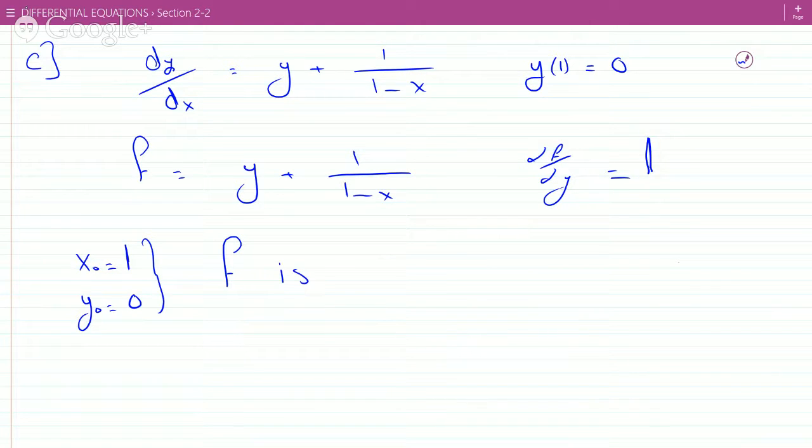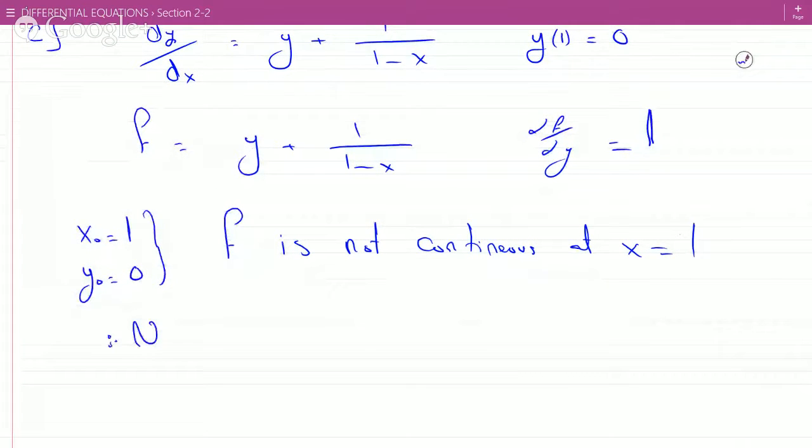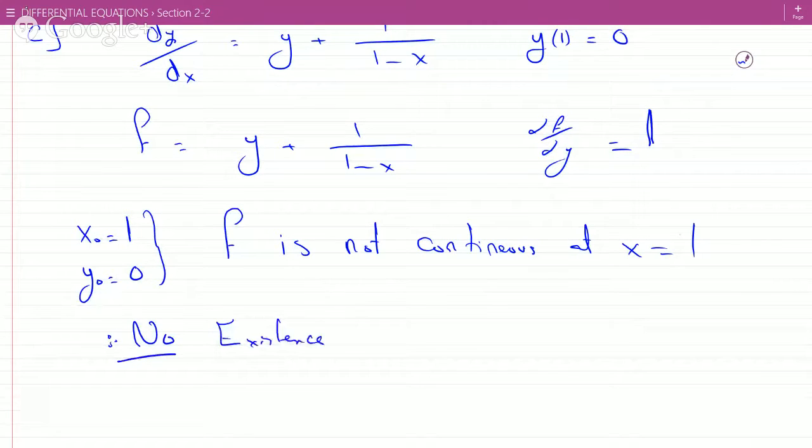So, f is not continuous at x equals 1. That's an asymptote. Therefore, no existence and uniqueness theorem, because we didn't satisfy the condition.